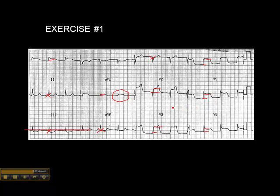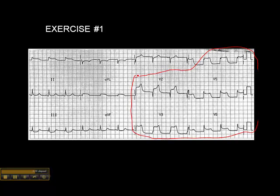Because we have ST elevation in V2 right through V6, plus leads 1 and AVL, this is an antero-lateral wall MI.